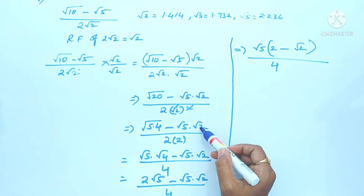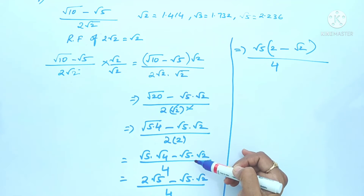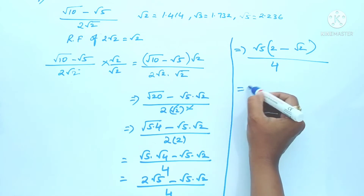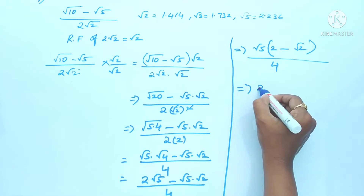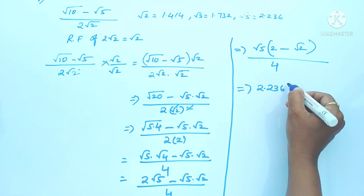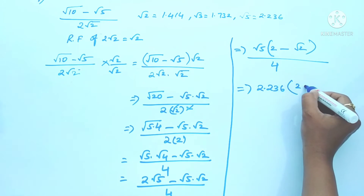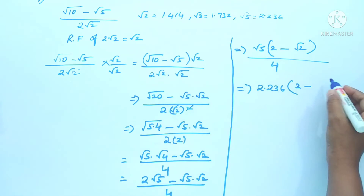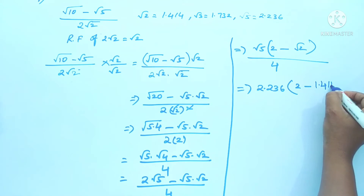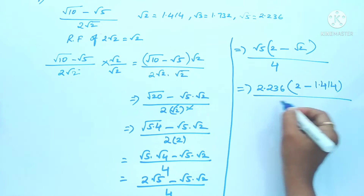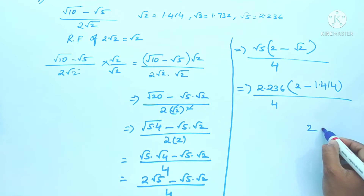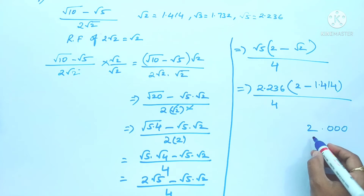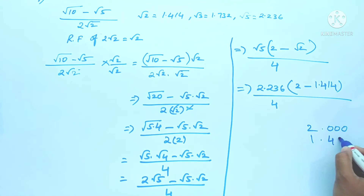That is why I didn't write √5 × √5 as √10. So the expression is √5 × (2 - √2) / 4. The value of √5 is 2.236, and the value of √2 is 1.414. So we get 2.236 × (2 - 1.414) / 4. Now we will subtract.